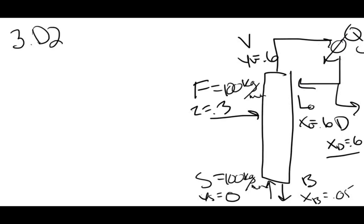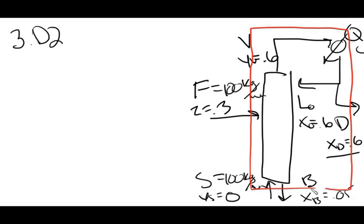So we want to find all the mass balances and energy balances that we can do on this system. If we do an overall balance, we're looking at the entire system with a control volume box around everything. None of the internal condenser streams matter — we're only looking at what's going in and what's going out. So if we do a mass balance, we have: Feed plus Steam equals Distillate plus Bottoms.